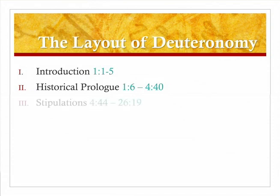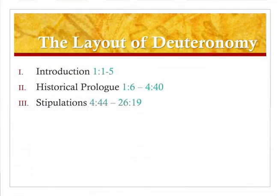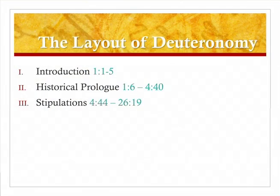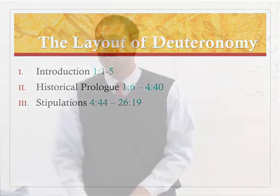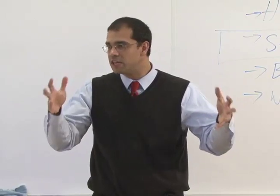Chapter 5 of the book of Deuteronomy. We're not going to cover the whole chapter today. This is another introduction to the next main section of the book. We've finished with the historical section. Now we move into the stipulation section.